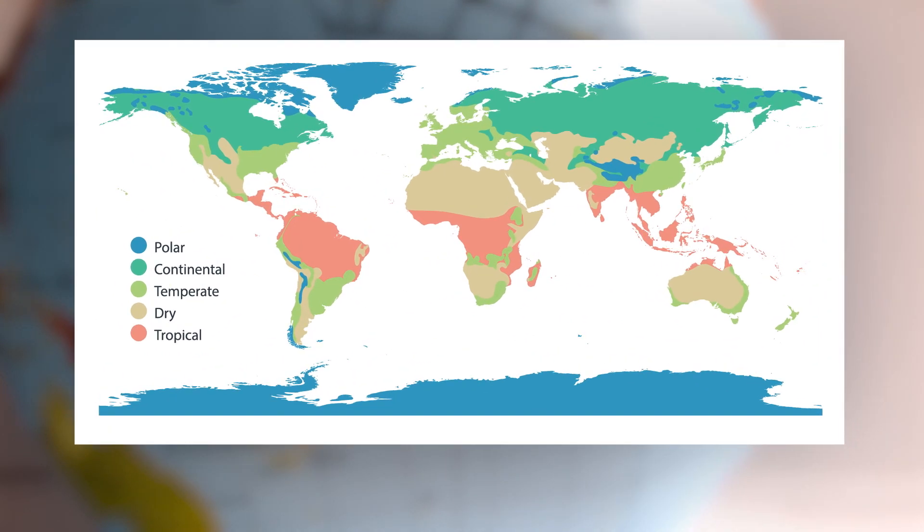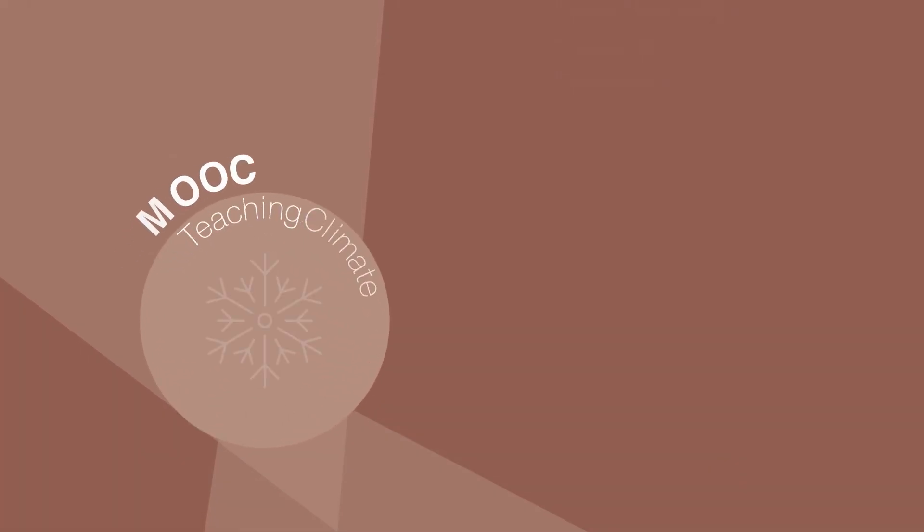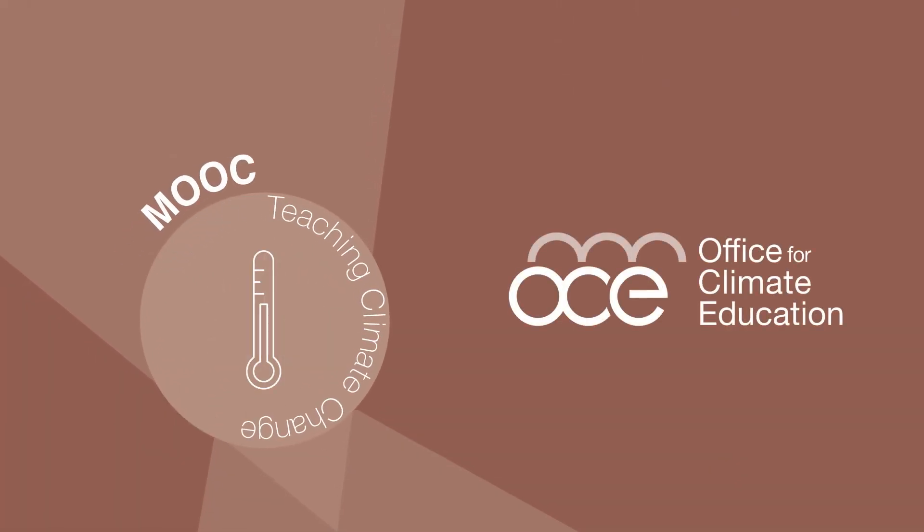We can thus explain the climate zonation by the spherical shape of Earth. Each area does not receive the same amount of energy, and it leads to a latitudinal variation of the climate.